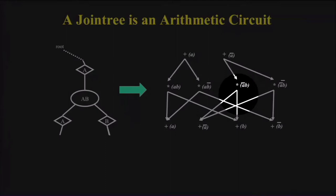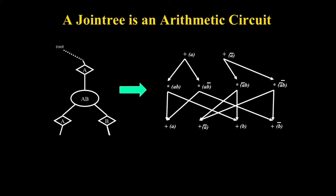The main point is: if you give me a joint tree, I can write an arithmetic circuit on the side whose size is exponential in the clusters and separators — giving the tree-width guarantee. The next slide is the more surprising part.